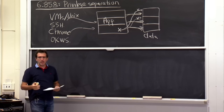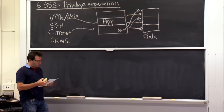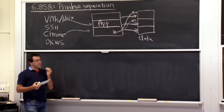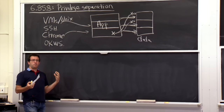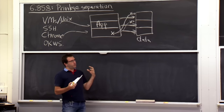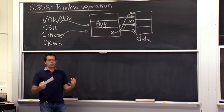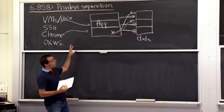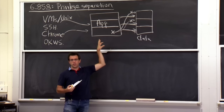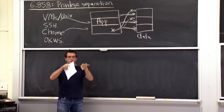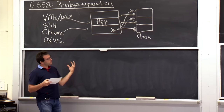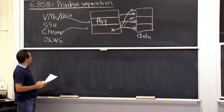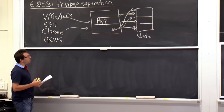Unix historically is not necessarily the best example of how to build a security mechanism, because its security mechanism came about from a fairly utilitarian need: separating different users on a single system from one another. They weren't thinking of it as a general purpose mechanism that applications like OKWS would use for privilege separation. Still, it's fairly prevalent and widely used — Chrome tries to use many of these Unix mechanisms.